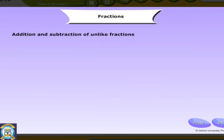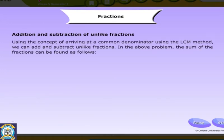Addition and subtraction of unlike fractions. Using the concept of arriving at a common denominator using the LCM method, we can add and subtract unlike fractions. In the above problem, the sum of the fractions can be found as follows.